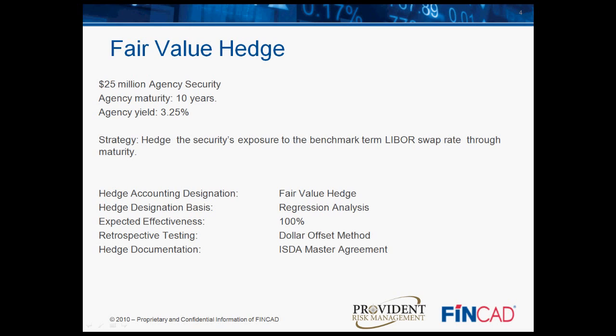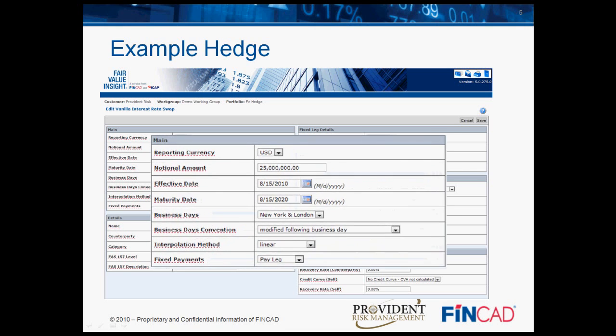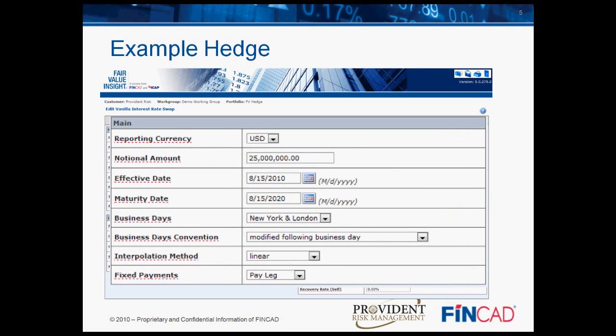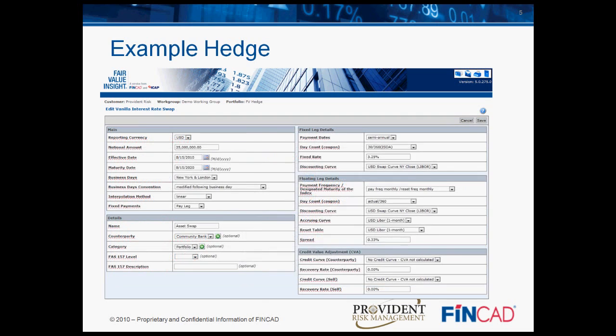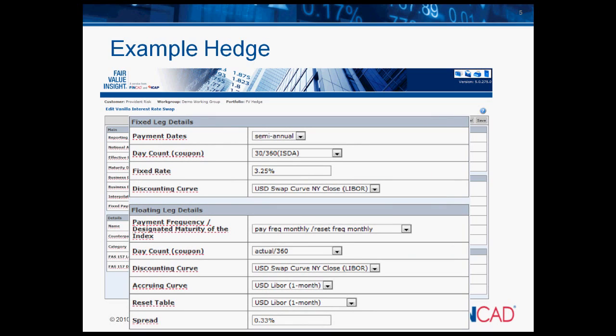Then we will negotiate credit terms and ISDA documentation. Here you can see a screen from Fair Value Insight. The notional amount of our hedge is $25 million, matching the principal amount on the bond. The term is 10 years. Under the swap, we will pay a fixed rate of 3.25%, paid semi-annually, matching the coupon on the bond. We will receive one-month LIBOR plus a spread of 33 basis points, with floating rate payments made monthly.